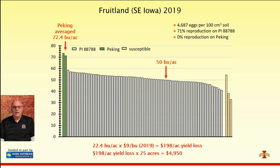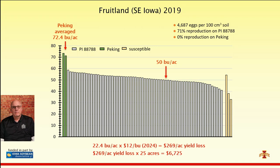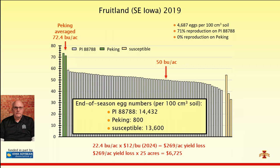That yield difference of 22 bushels per acre at $9 per bushel means roughly $200 per acre in lost income — and across the farmer's 25 acres, almost $5,000 in lost income. At today's prices of $12 per bushel, that's $269 per acre or over $6,700 for those 25 acres. And it's not a one-year occurrence or a crazy aberration — I will acknowledge that Fruitland gives us maximum reproduction and yield loss, but this is a recurring pattern.